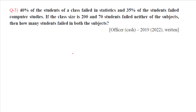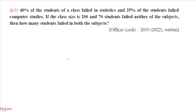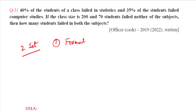Question number three: 40% of the students of a class failed in statistics, and 35% of the students failed in computer studies. If the class size is 200 and 70 students failed in neither of the subjects, then how many students failed in both subjects? This is a two-set question, which can be solved using a Venn diagram or by applying the set formula.